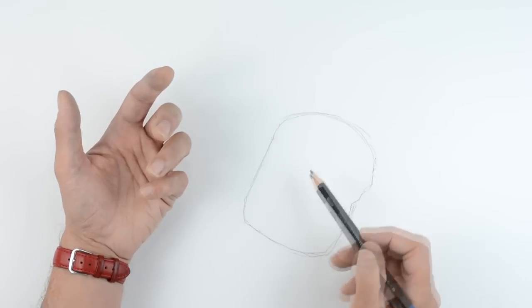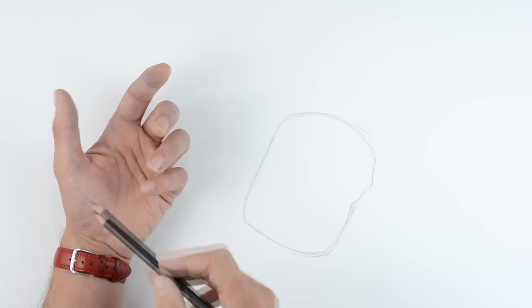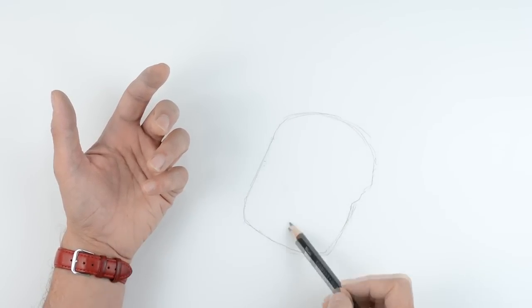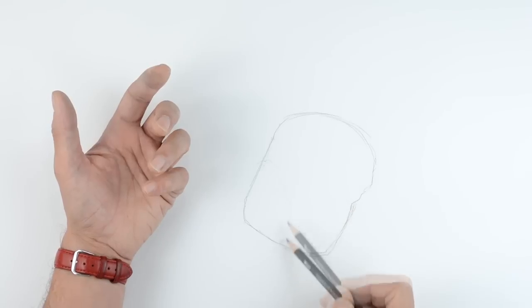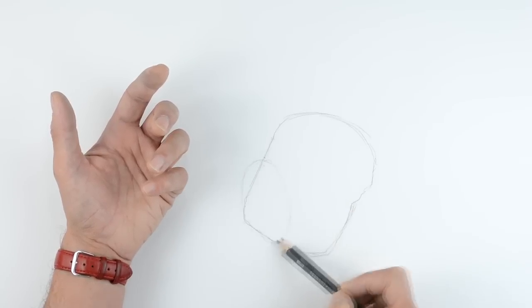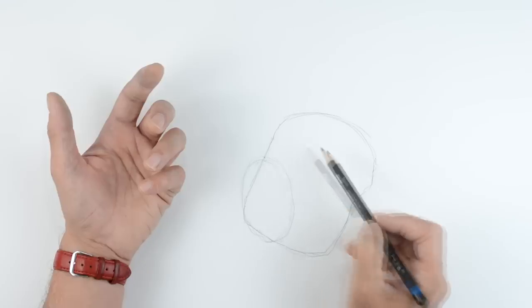I'm going to just put the base of the thumb in. That is this section just here, half and half again, so just put that oval shape in.